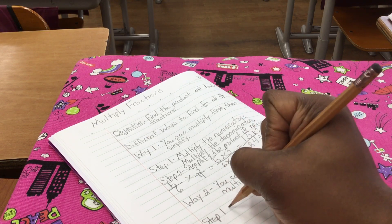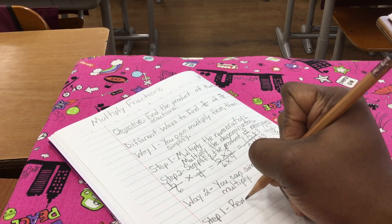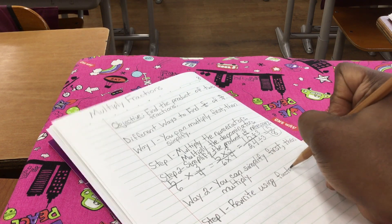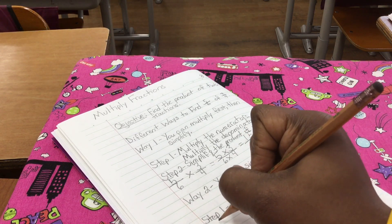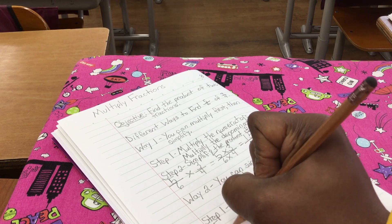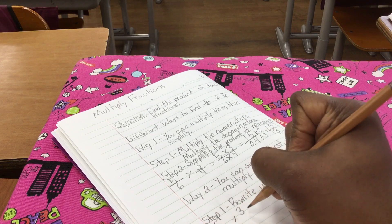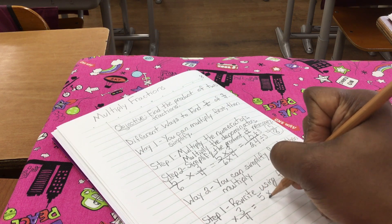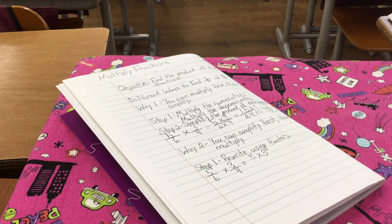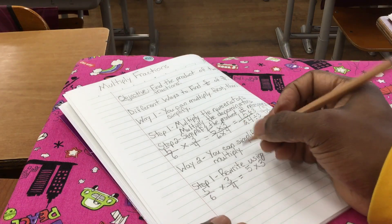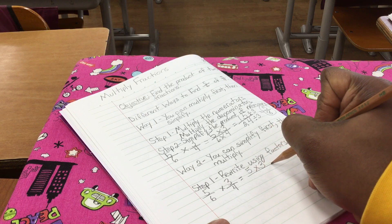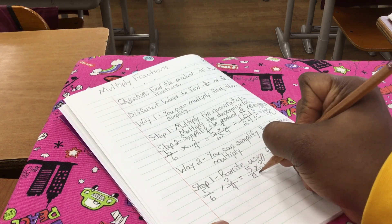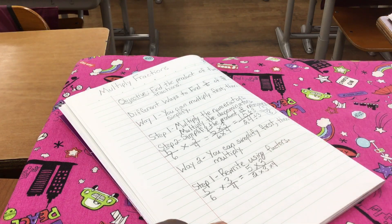Let's go to step one. Rewrite using factors. So, when I do that, I have five-sixths times three-fourths. But I'm going to do it this way. Five times three over—what are my factors for six? Well, two and three. So, two times three times four.